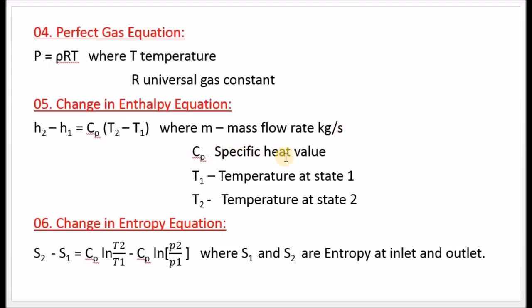Fifth, the Change in Enthalpy Equation: h₂ minus h₁ equals Cₚ times (T₂ minus T₁), where m is mass flow rate in kg/s, Cₚ is specific heat value, and T₁, T₂ are temperatures at state 1 and 2.